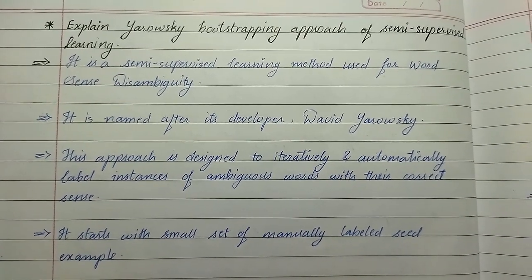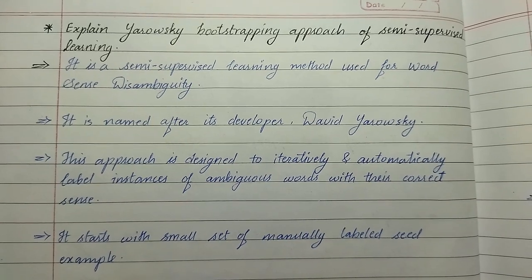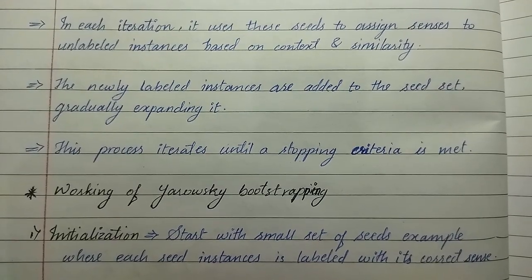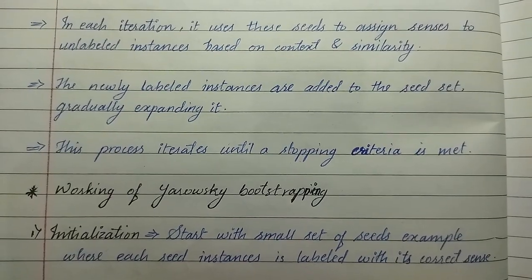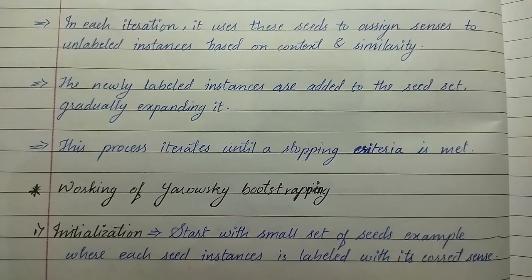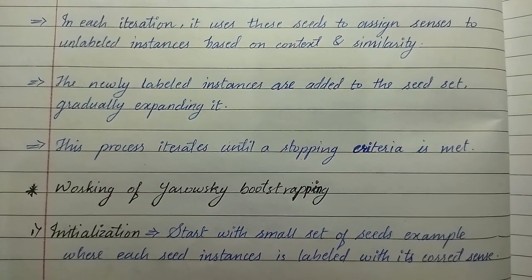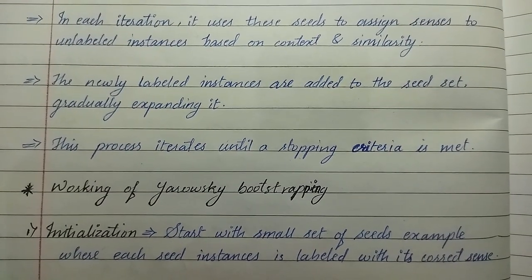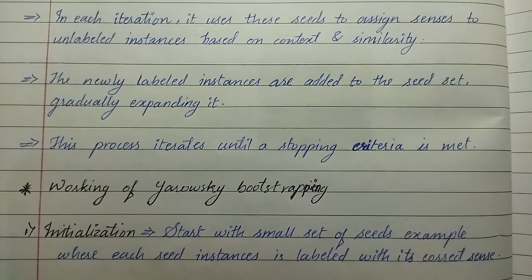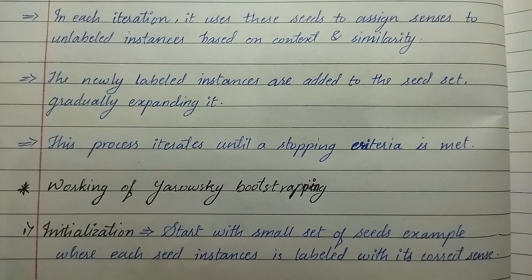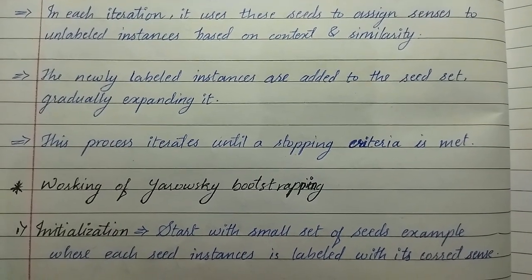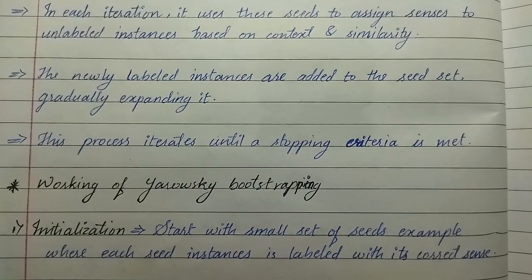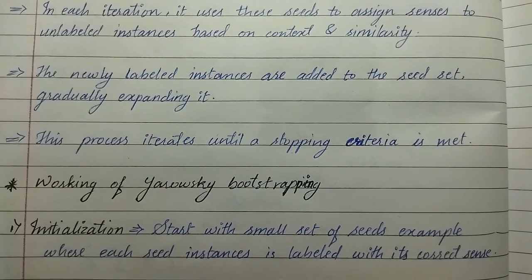It starts with a small set of manually labeled seed examples. In each iteration, it uses these seeds to assign senses to unlabeled instances based on context and similarity, and the newly labeled instances are added to the seed set, gradually expanding it. This process iterates until a stopping criteria is met.